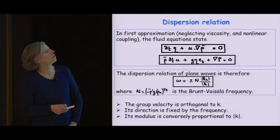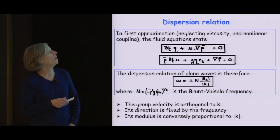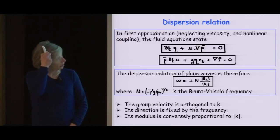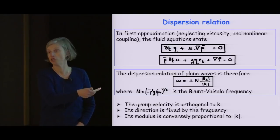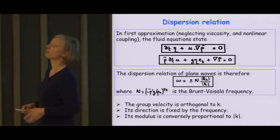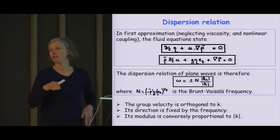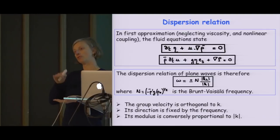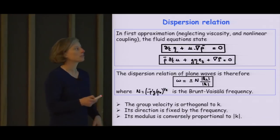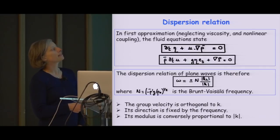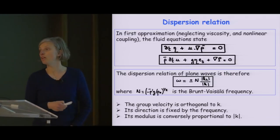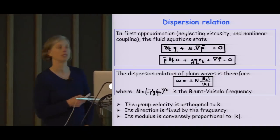This N is called the Brunt-Väisälä frequency, related to the gradient of rho (rho-prime) and the average value rho-naught. It has the dimension of a frequency, while the ratio |k_h|/|k| has no dimension. A remark: if instead of looking at internal waves from stratification, you look at inertial waves from rotation effects, you get a very similar dispersion relation: omega equals a constant times k_3 divided by |k|. We will see that these two kinds of waves have very similar properties.